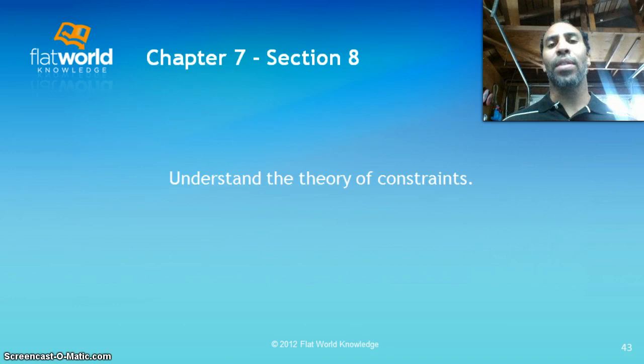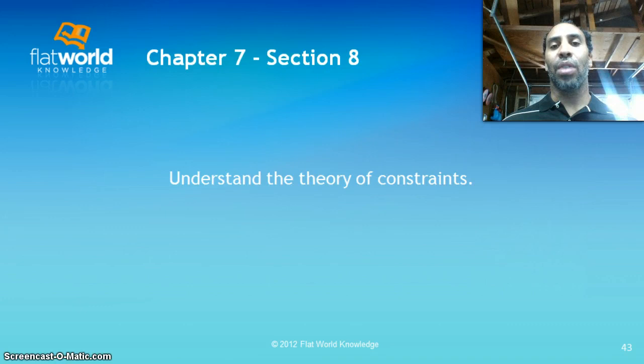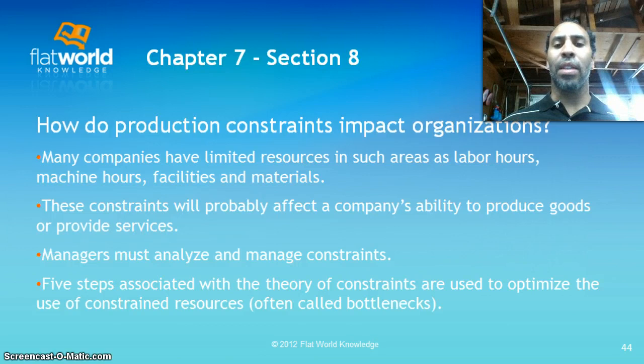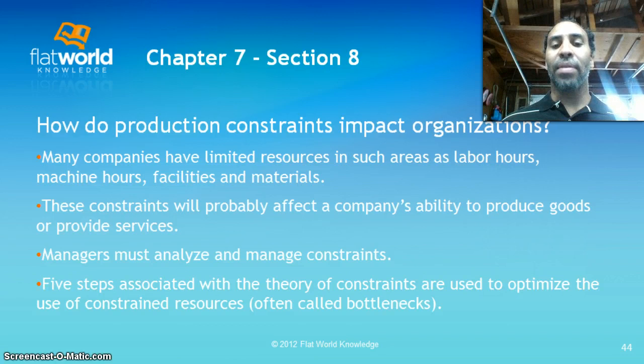Next, we want to understand the theory of constraints. We all have constraints — in business you have constraints on labor, overhead, and various costs you can incur. Many companies have limited resources in areas such as labor hours, machine hours, facilities, and materials. These constraints affect the company's ability to produce goods or provide services. Managers must analyze and manage constraints, and five steps associated with the theory of constraints are used to optimize constrained resources, often called bottlenecks.